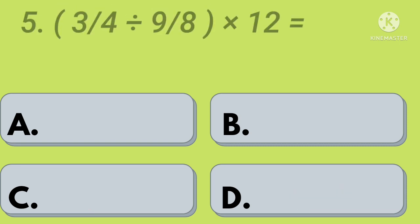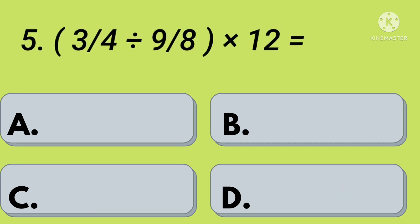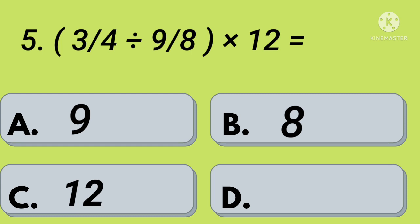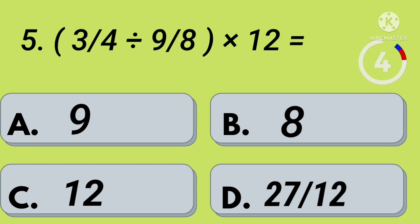Fifth question: 3 by 4 divided by 9 by 8, all into 12 equals — option A: 9, option B: 8, option C: 12, option D: 27 by 12. Your time starts now. Right, option B: 8.